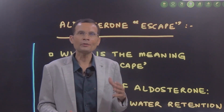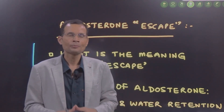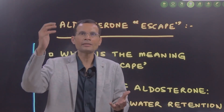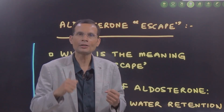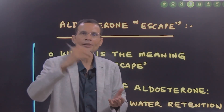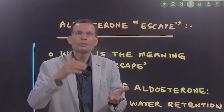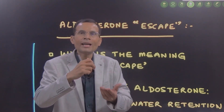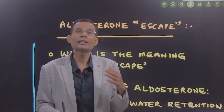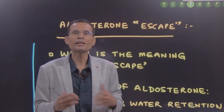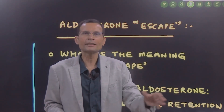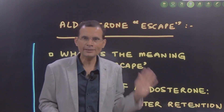What is the meaning of escape in human physiology? Imagine that there is an organ system and it is under the influence of some regulator. Initially, the regulator will exert its influence, but eventually the organ system will escape the effect of the regulator. For example, we talk about vagal escape or aldosterone escape.